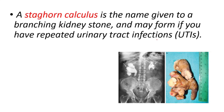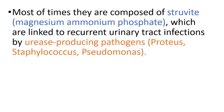Staghorn calculus is the name given to a branching kidney stone, and may form if you have repeated urinary tract infections. Here you can see an example of that, and this is an example of an X-ray image. In this video we're going to talk about staghorn kidney stones. Most of the time they are composed of struvite, which is magnesium ammonium phosphate.